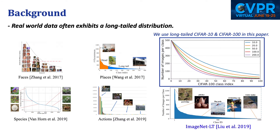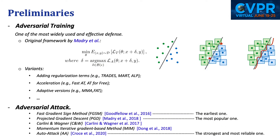In this work, we leverage the manually created long-tailed versions of CIFAR-10 and CIFAR-100 datasets for the main parts of our experiments. We also provide some preliminary results on the long-tailed version of ImageNet in the supplementary. The basic defense framework we use is adversarial training, one of the most effective and widely used methods with a number of variants. It can be formulated as a minimax problem, where the inner optimization finds an adversarial example that maximizes the classification loss, while the outer minimization trains a robust classifier. We evaluate robustness with five attacks, highlighting that PGD is the most popular one and auto-attack is the strongest among the five.